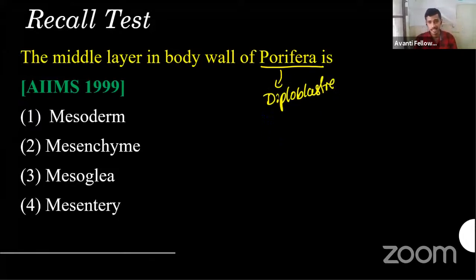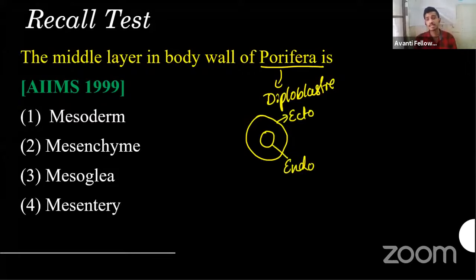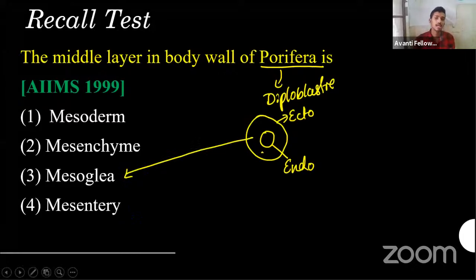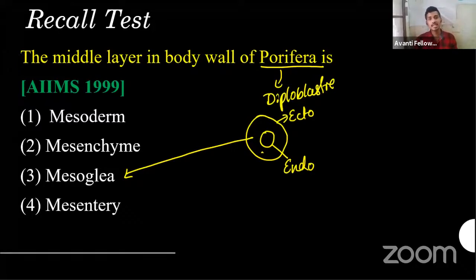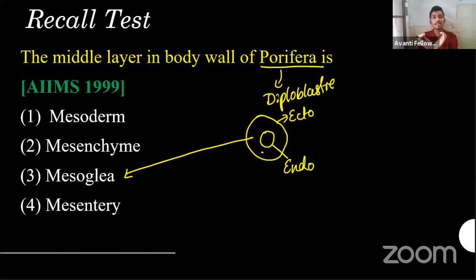If it is diploblastic, there will be an outer ectoderm and an inner endoderm only — two layers. What is in between? In between it contains mesoglia. They may ask what kind of germinal layers it will have. The question was tricky — they asked about the 'middle layer in the body wall of Porifera,' and many thought mesoderm because of the word 'middle layer.'